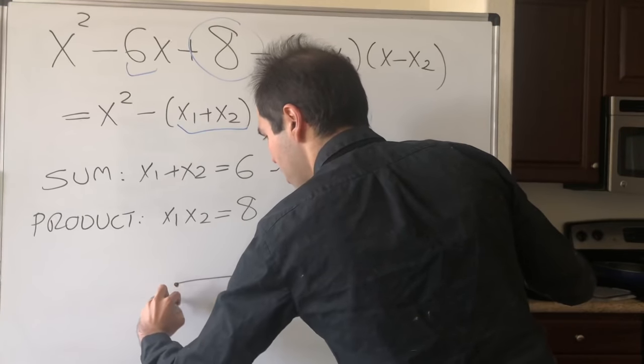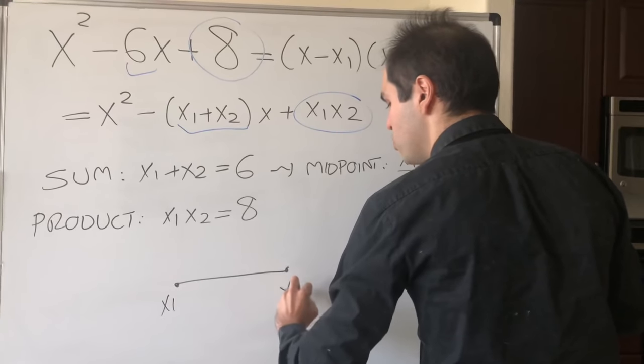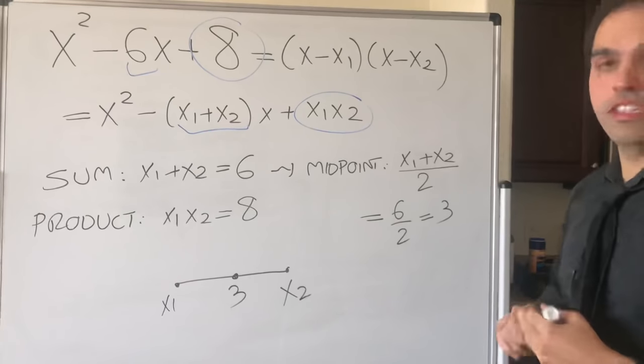So in particular, if let's say x₁ is the left root and x₂ is the right root, then the midpoint between the two is 3.